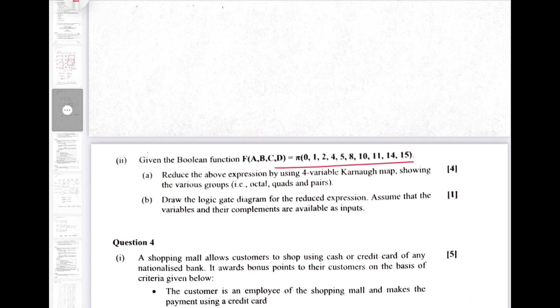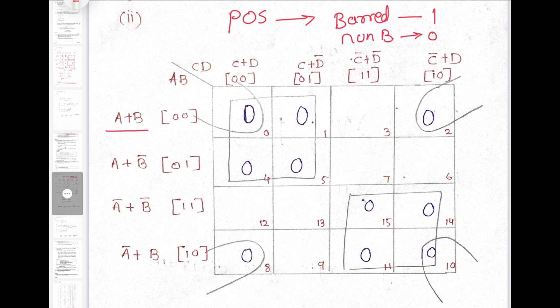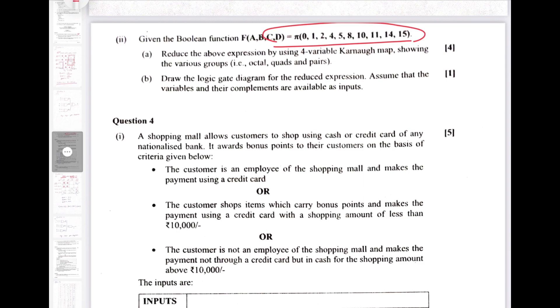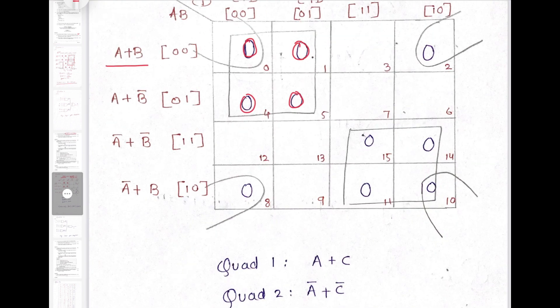Now question number 3 second part: a POS expression is given and we have to draw the K-map for the same. The K-map design will remain the same but the entries will change. In POS form, a barred letter represents 1 and a non-barred letter represents 0 — it is completely opposite of SOP. Since we are drawing a K-map for POS, we have to put zeros for the entries given in the question: 0, 1, 2, 4, 5, 8, 10, 11, 14.